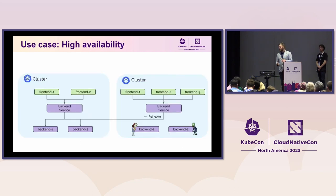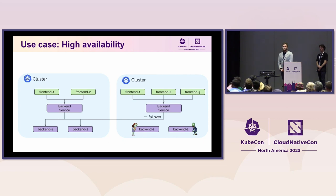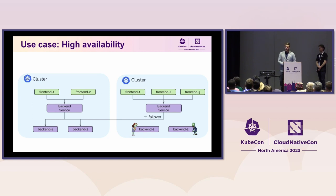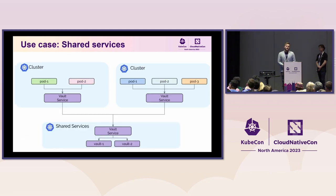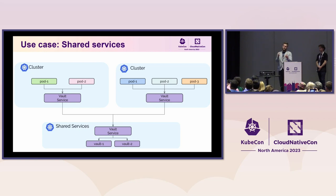Let's go through two use cases showing what's possible with cluster mesh. In one example, you have two clusters with backends deployed to both. If you misconfigure backends in one cluster, Cilium and cluster mesh can automatically redirect those connections to the other cluster — useful for high availability. Another case: instead of deploying a service like Vault to all clusters you manage, you can have a single cluster managing that service and simply expose it to other clusters that can then utilize it.